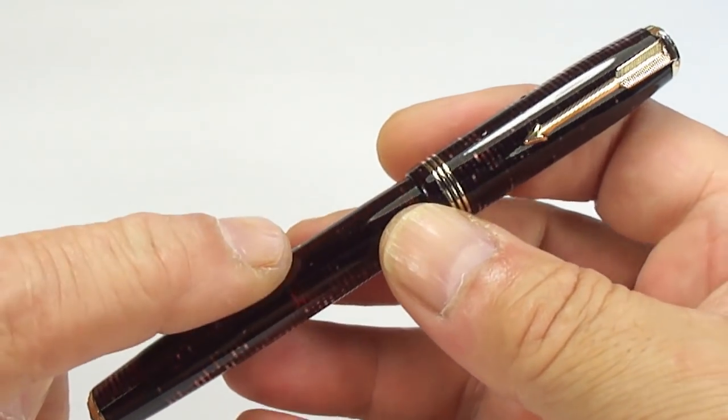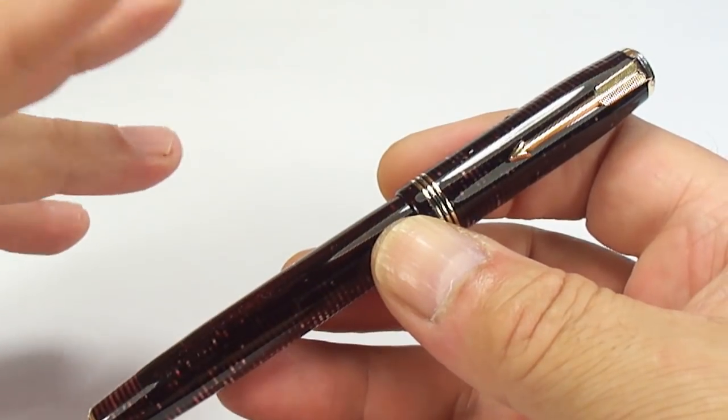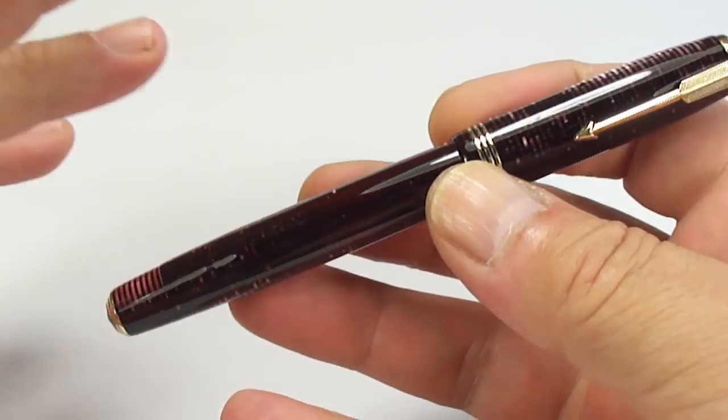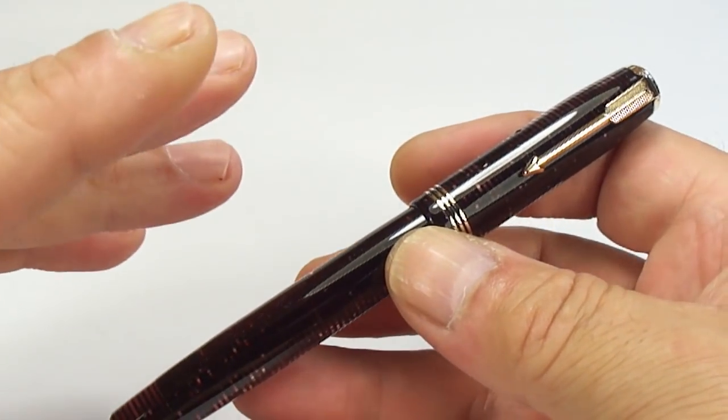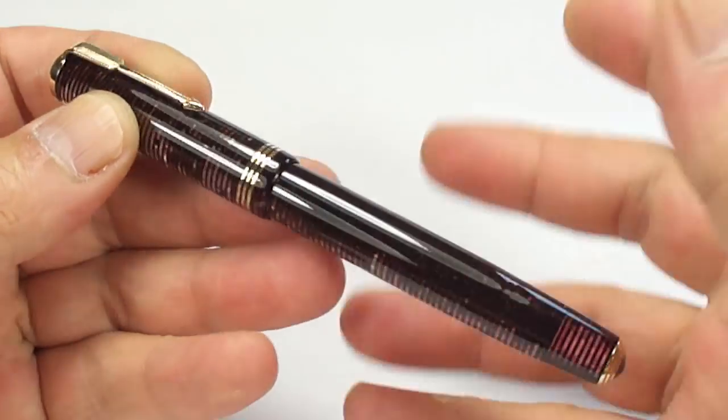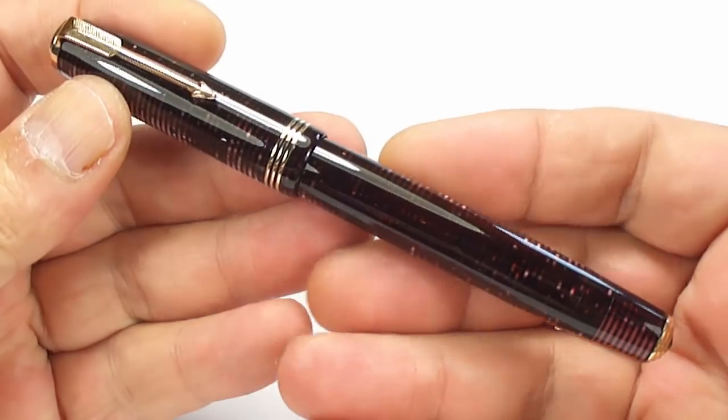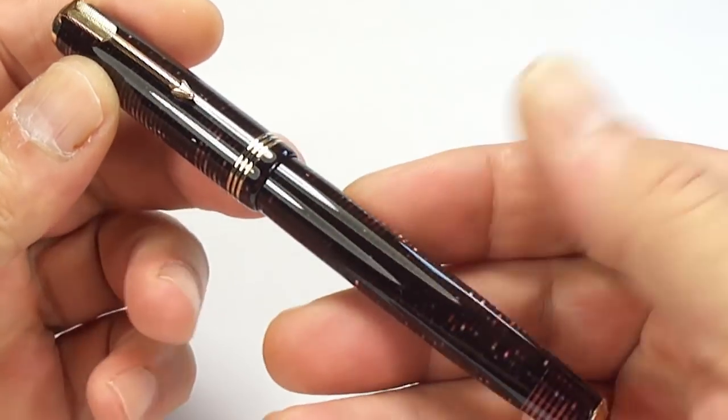Now although I'm dating it 1938, the Vacumatics, they started making them around about early 1930s, I believe around about 33 or something like that, and they went through to around about 1939, when they then changed the filling system. Now this one as I say is 1938, we'll come to that in a moment.